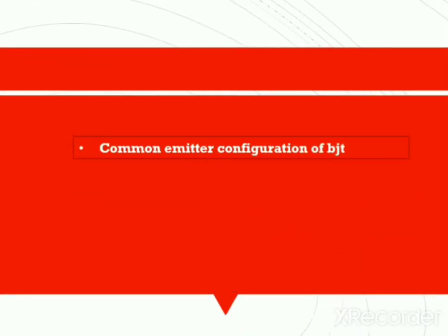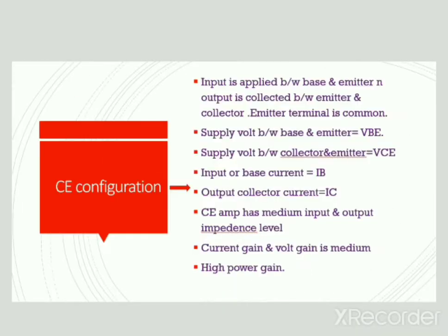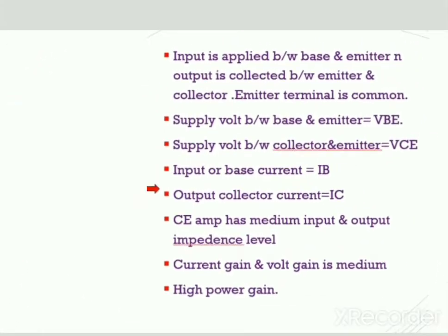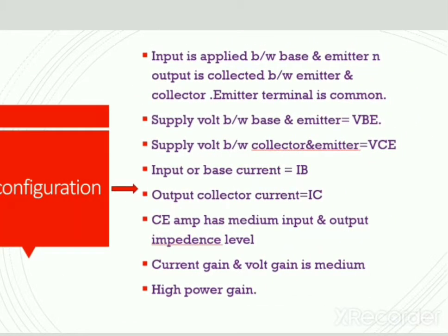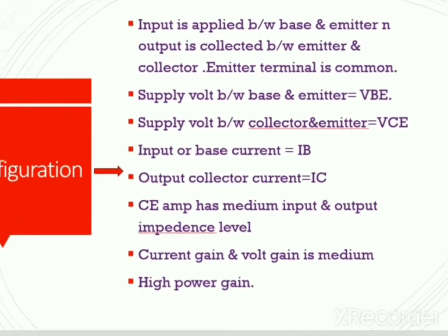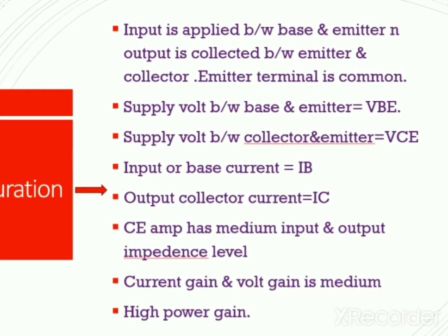In the previous video we discussed common base configuration. Today we are going to discuss common emitter configuration of BJT. In common emitter configuration, the input is applied between base and emitter, and the output is collected between emitter and collector. The emitter terminal is common to both input and output.